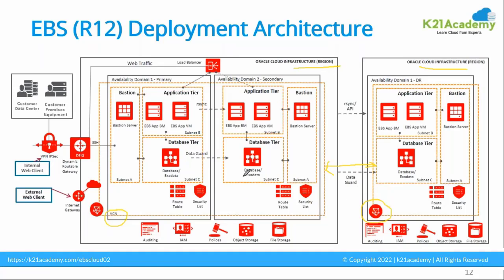Now if you see here, there is one Data Guard here and another one here. This is basically known as the daisy chain approach — the most recommended architecture by Oracle. You are just going to ship the data here. This is going to be in synchronous mode, and this further syncs to the next Data Guard, which is going to be in asynchronous mode.